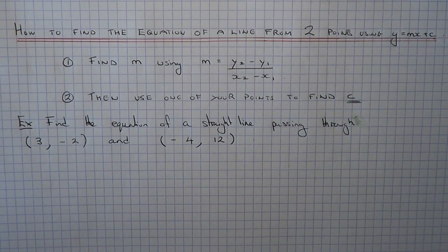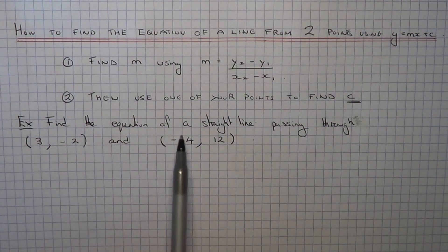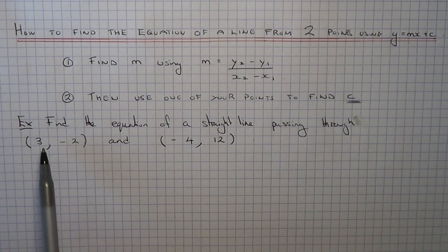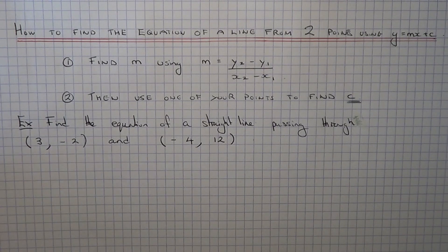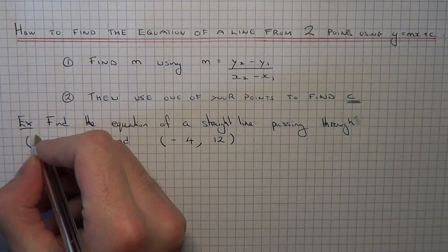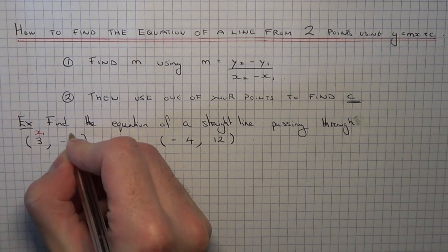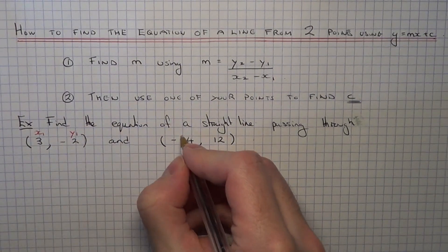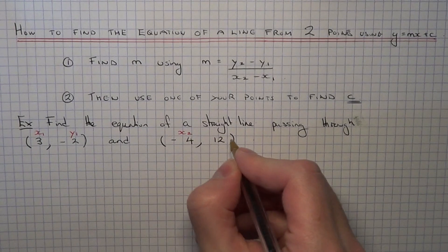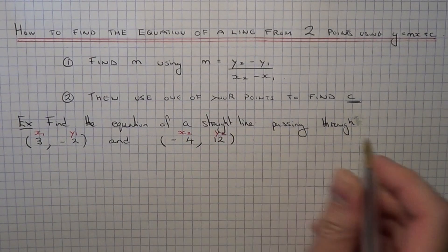So let's go straight into the example. Find the equation of a straight line passing through (3, -2) and (-4, 12). So this is our first coordinate point x1 and y1. This is our second coordinate point x2, y2.